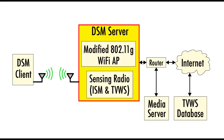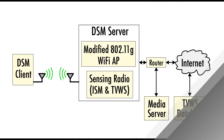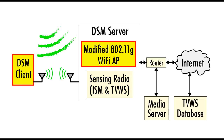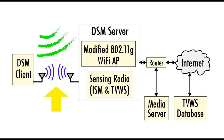Our DSM server expands the amount of available bandwidth by accessing a TV white space database via the Internet. During our Wi-Fi transmission, interference is introduced. The DSM sensing radio detects this and orders the DSM server and DSM client to change the active channel.